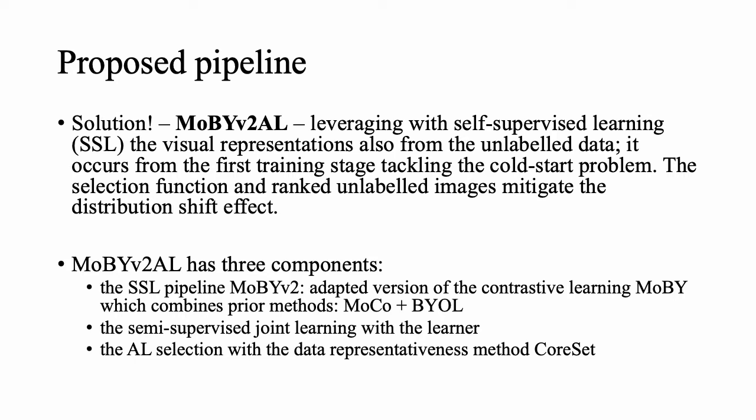The proposed solution is MobiV2AL. It leverages self-supervised learning and tries to learn visual representation from the unlabeled data as well, and from the first training stage — in this way it tackles the cold-start problem. The selection function uses a ranking of unlabeled images to mitigate the distribution shift effect. MobiV2AL has three main components: the SSL pipeline of MobiV2, the semi-supervised joint learning with the learner, and the active learning selection with the data representativeness method, core set.